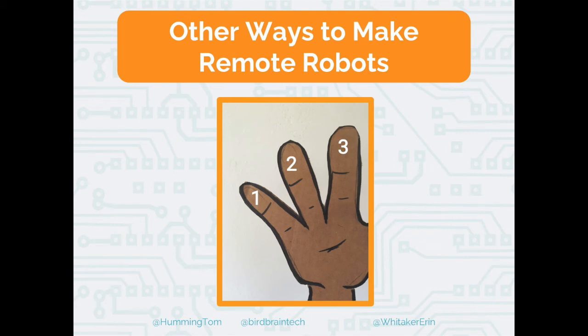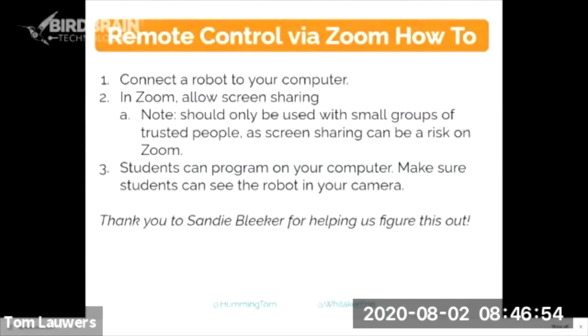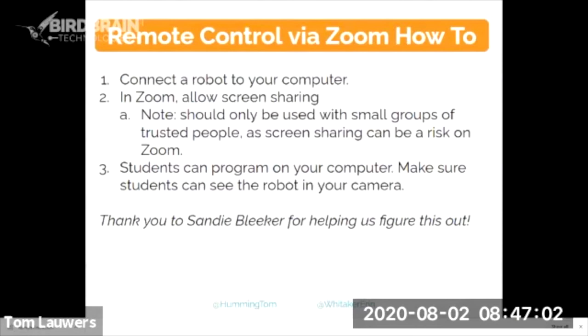To round out the discussion, Tom wants to talk about two other ways you can make remote robots — where the robot is at the teacher's location and students are somewhere else collaborating over the internet. One that is straightforward but has limitations is to allow students control of your computer via Zoom. There is a remote control feature in Zoom where you could have a programming environment open and they could be programming directly on your computer. A nice thing about video conferencing applications is you can call in with multiple devices — if you want a second camera view looking at the robots, you can call in from your phone and point it at the robots.